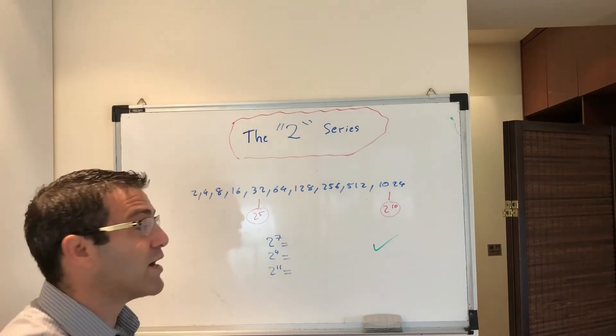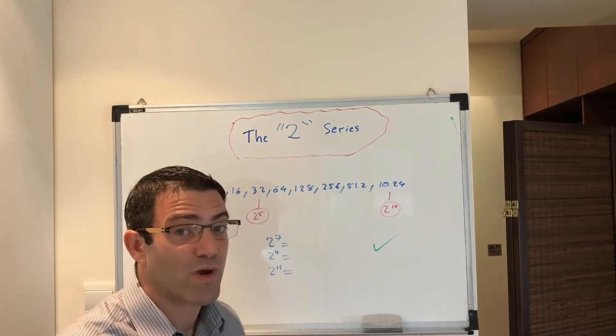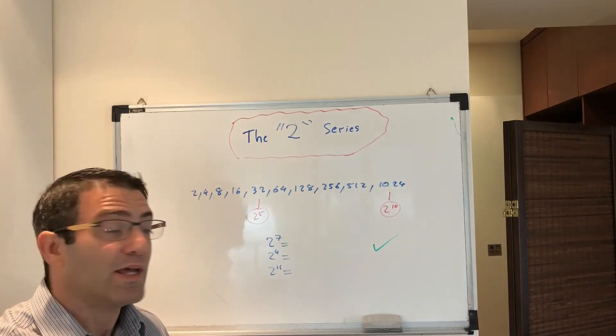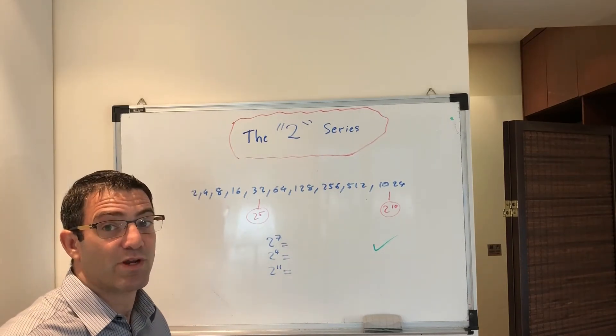And then put a mental marker for 2 to the power of 10 and say 2 to the power of 10 is 1024. That's not too hard because it starts with a 10 and then you just have to add the 24.